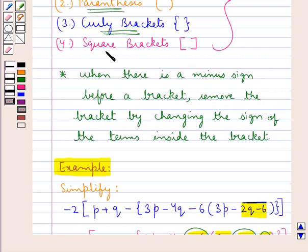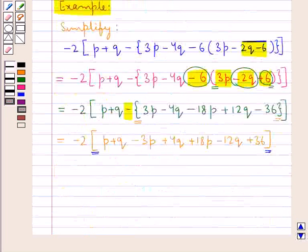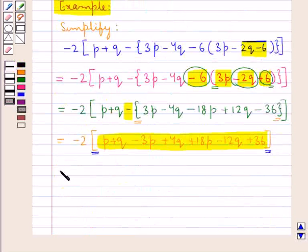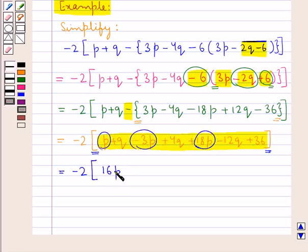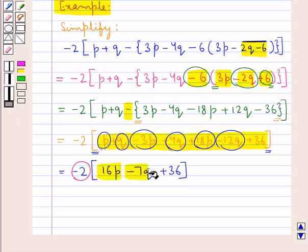Now finally we shall remove the square brackets. Before that, let's simplify the expression inside the square bracket. This is equal to minus 2, square bracket open. For p: p minus 3p plus 18p gives us 16p. For q: plus 4q minus 12q gives us minus 7q, and here we have plus 36, square bracket closed. As you can see, we have minus 2 before the square bracket, so to remove it we need to multiply each term by minus 2.